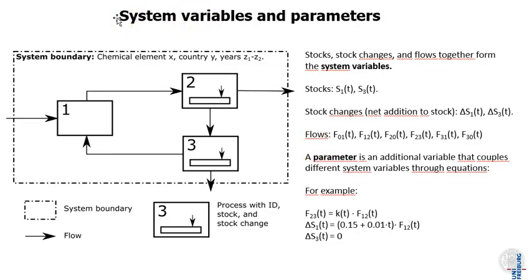We can go through the definition of the basic MFA terms and everywhere we have a time dependency we just add the time dimension. We have the years Z1 to Z2 as a time frame where we quantify the system. The stocks change over time or are dependent on time, and so the stock changes and flows and also the parameters can now be time dependent. For example, this K here is a linear function starting at a base value and then slightly increasing over time.